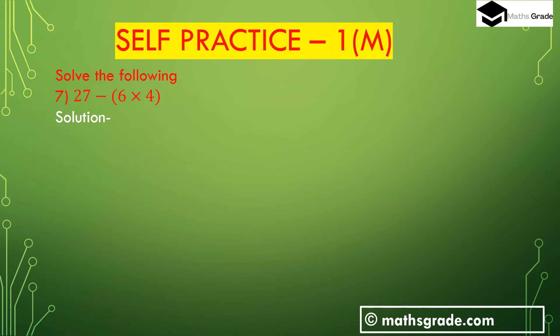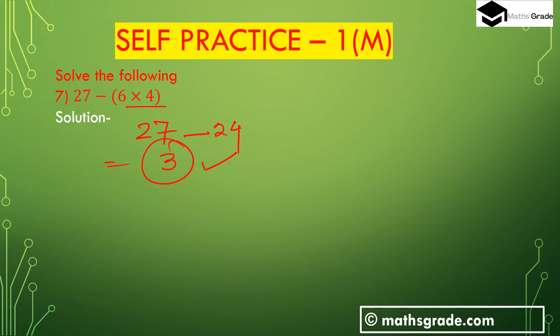Now question number 7: 27 minus (6 multiplied with 4). First we have to calculate the multiplication inside the bracket: 6 multiplied with 4 is 24. Then 27 minus 24 is 3. So 3 is the answer. So 27 minus (6 multiplied with 4) is 3.